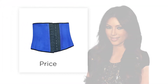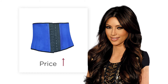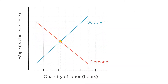If a celebrity endorsement from Kim Kardashian significantly raises the price clothing makers can charge for corsets, what happens to our supply and demand curves for the labor to produce these newly popular corsets? Well, the supply curve doesn't change at all. Labor supply only depends on the leisure versus consumption trade-off that individuals make, and that trade-off hasn't changed.